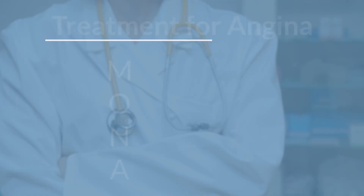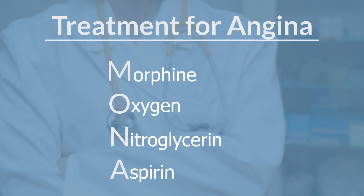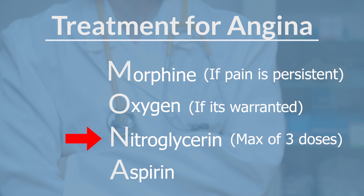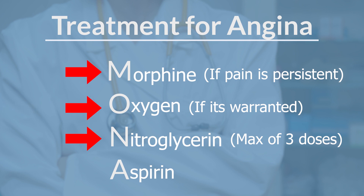When this patient presents, we want to rule out that it's not an MI and that it's just angina. We're still going to use the MONA approach but in a slightly different order. We can give nitroglycerin, but only up to a max of three doses. Give morphine only if the pain is still persistent — it's not automatic. Oxygen if it's warranted, and then you're still going to give aspirin as an antiplatelet to help prevent any clots from forming.